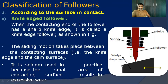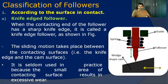Due to the contact between the cam and follower surfaces and the relative motion between these two members, the wear rate is high. When the contacting end of the follower has a sharp knife edge, it is called a knife-edged follower. The sliding motion takes place between the contact surfaces, and this sliding motion causes wear of this sharp edge, slowly changing its dimensions. That's why it is seldom used in practice, because the small area of contact surface results in excessive wear.